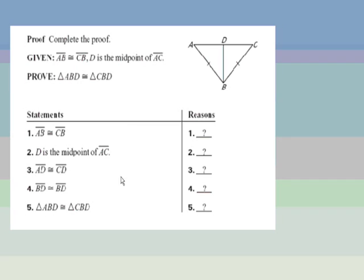We're going to do a proof first. Triangle congruence proofs are probably the easiest of all the proofs you're going to do. What you first have to do is look at what you're given. We are given that AB is congruent to CB, and that is marked on here. And I know that D is the midpoint of AC, which divides it into two congruent parts. These two triangles each share side BD, so I like to mark that side congruent to itself. You can see from my diagram that we have side-side-side congruence going on.